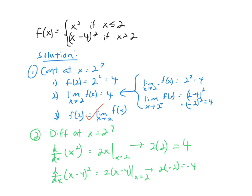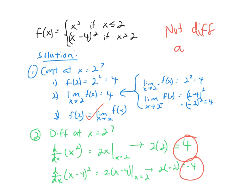Now let's look through my solution. I checked for continuity and confirmed the function was continuous — the functional value equaled the limit as x approached two, with both one-sided limits equal. Then I checked differentiability at x equals two: the slope of the left piece x squared at x equals two gave a slope of 4, and the slope of the right piece gave negative 4. Since the slopes are not equal, f(x) is not differentiable at x equals two.